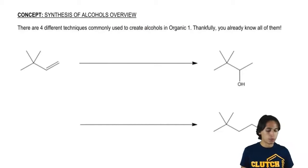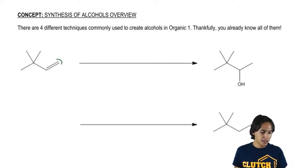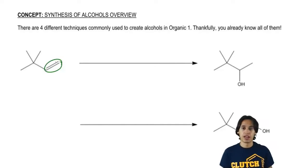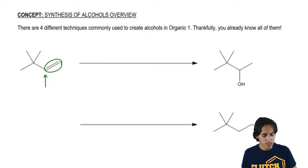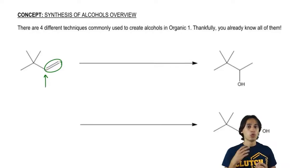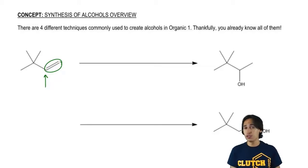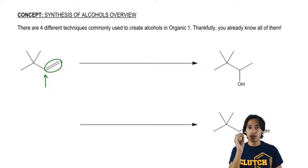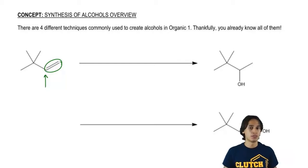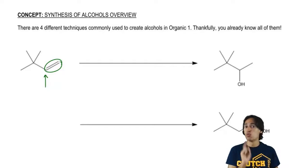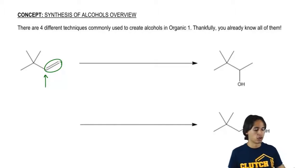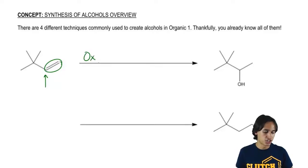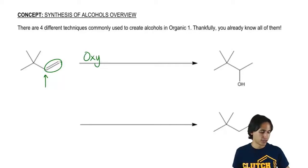Let's say that I have a double bond and I'm trying to add a hydroxyl group to it — specifically in this position. What addition reaction could I use to put a hydroxyl right on that secondary position? The answer is that there's only one reaction that could yield this kind of alcohol, and that would be oxymercuration, or what we call oxymerc.